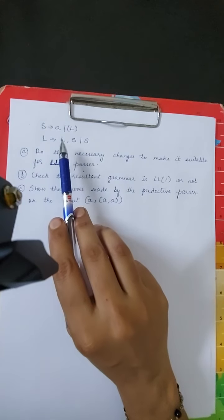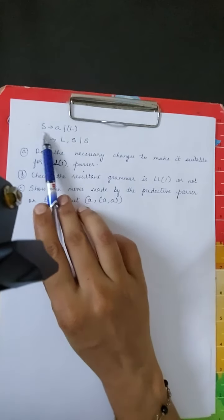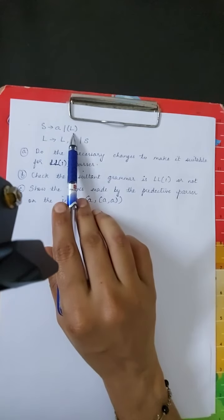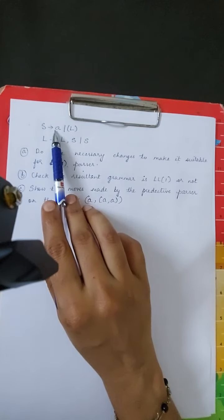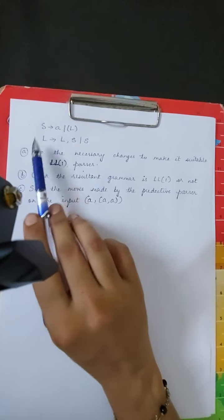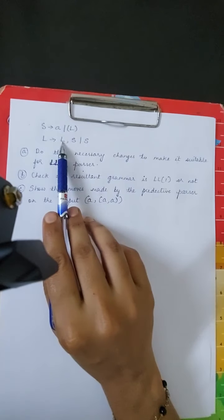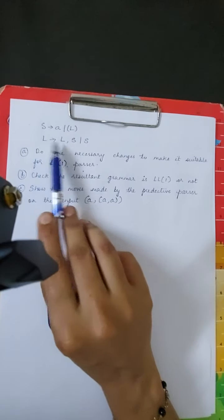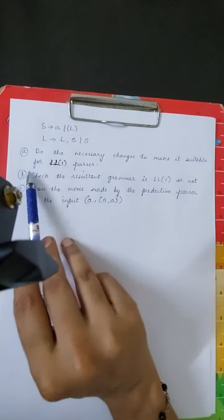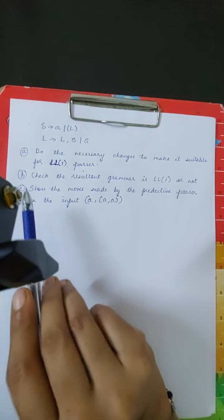First we need to check whether it is left recursive or not. Looking at the first production, it is not left recursive because the first variable in the body of the production is not the same as the head. But in the second production, L is the first variable and also the head of the production — they are the same, so it is left recursive.